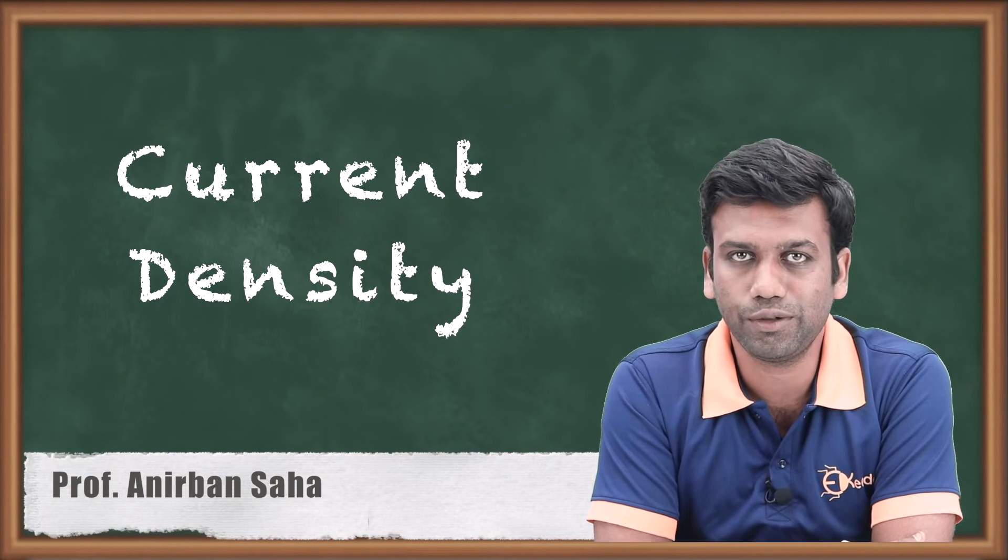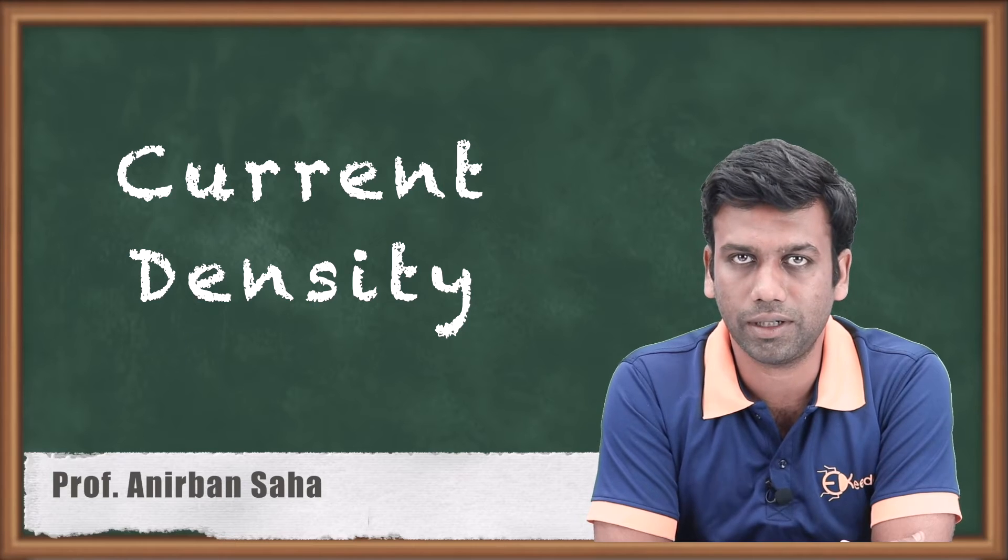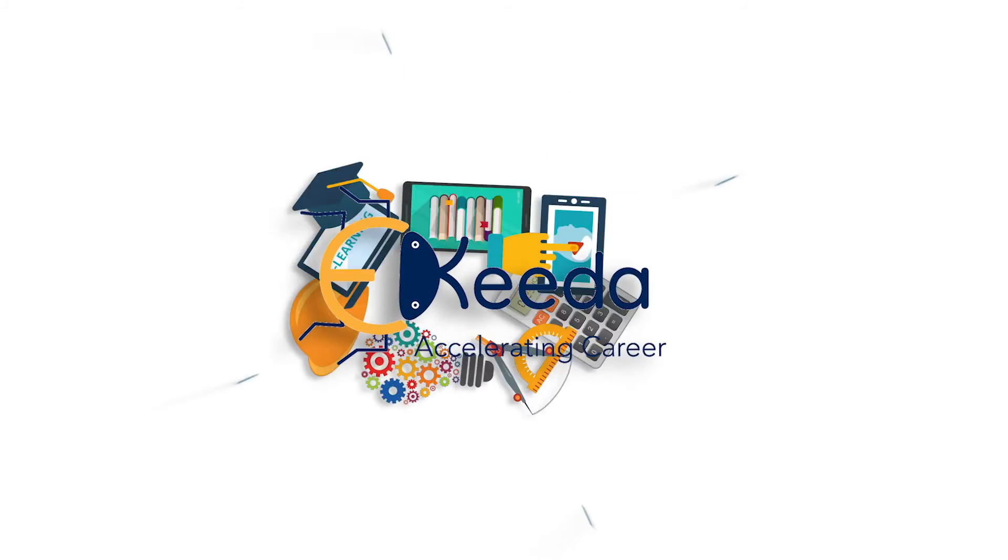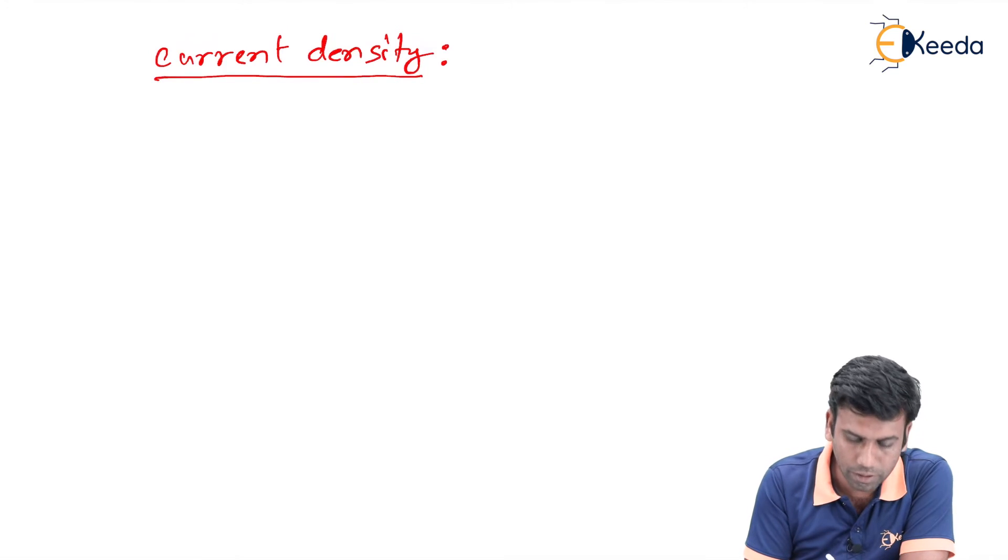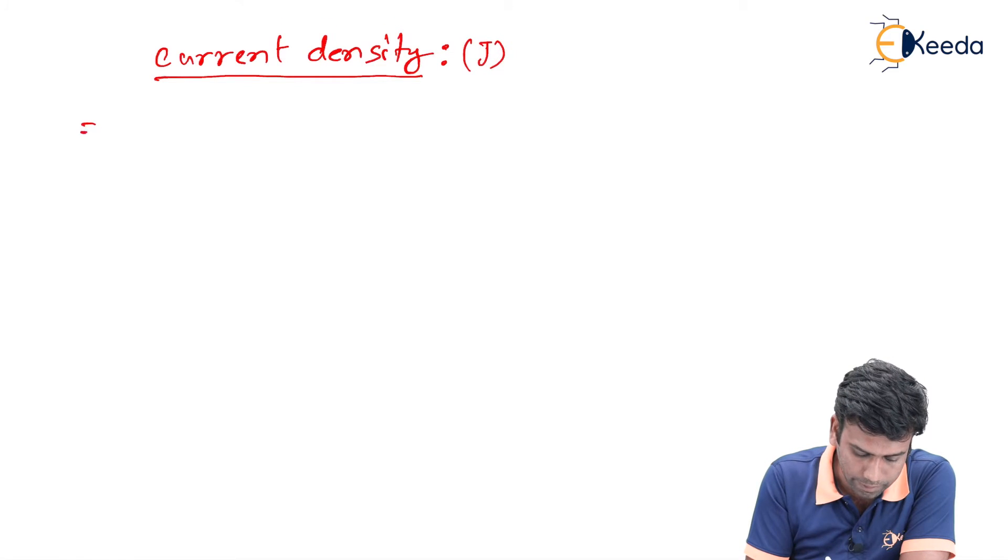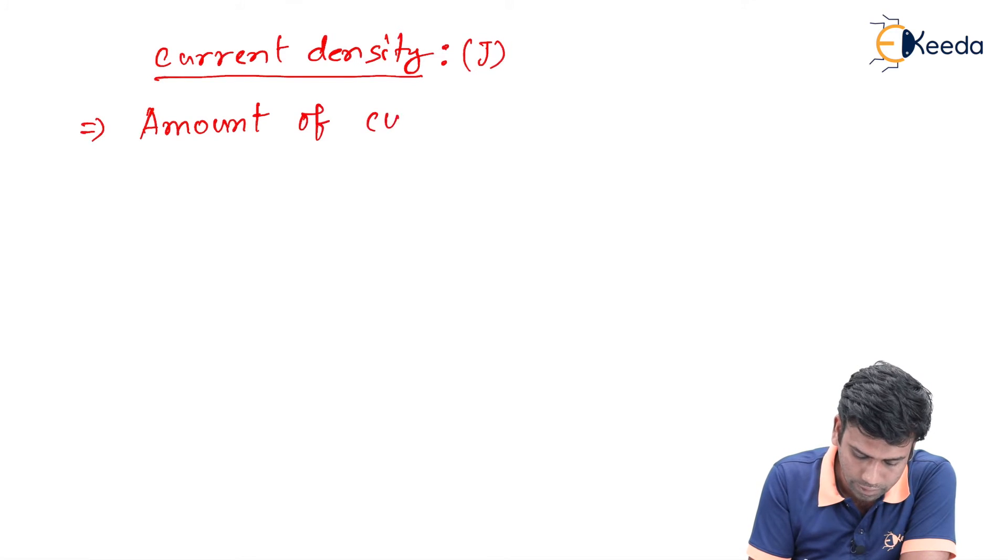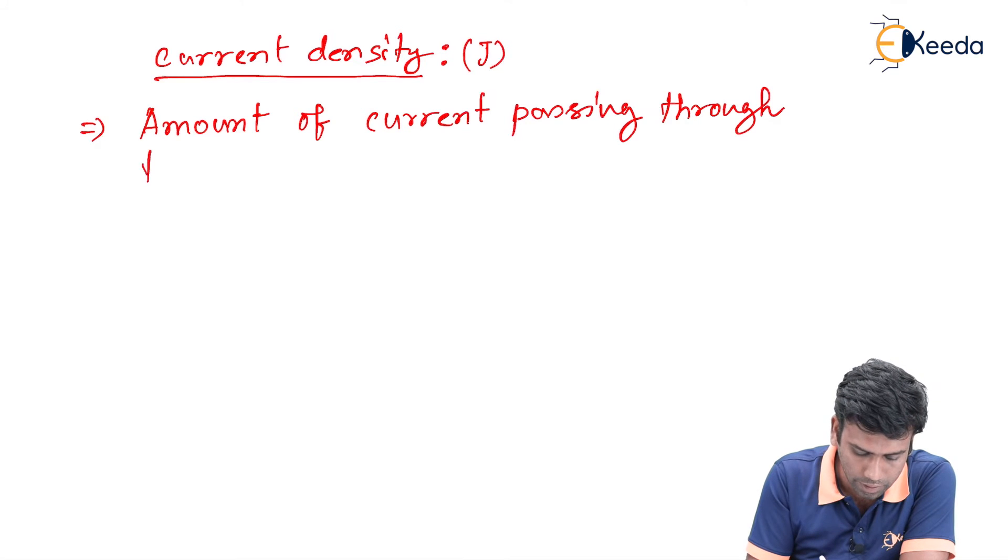Hello friends. In this video, we are going to discuss the current density in semiconductors. Current density in the semiconductor is denoted by the capital J term. It is defined by the amount of current that is passing through the unit area.